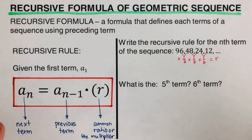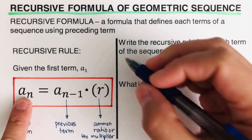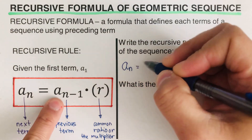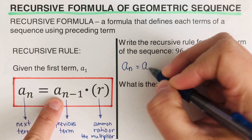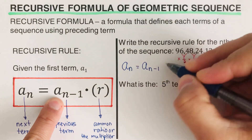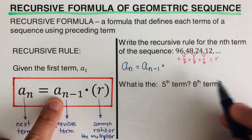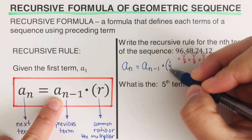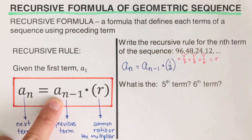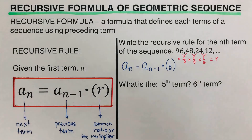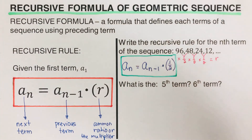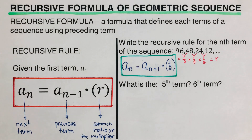To write the recursive rule for this sequence, we follow the general form. So we write: a_n is equal to a_{n-1} times one-half. This is our recursive rule for the given sequence.